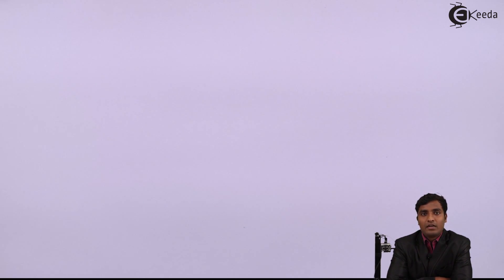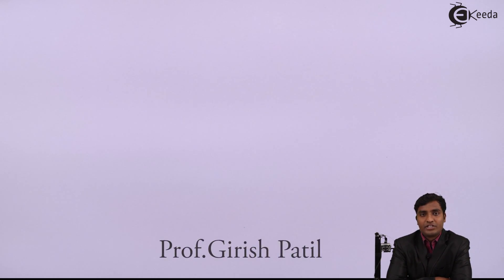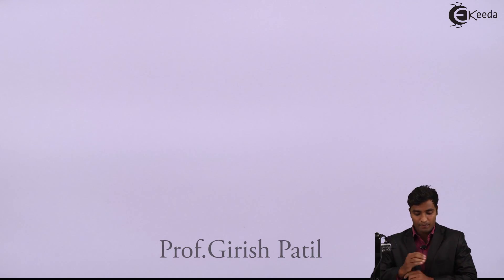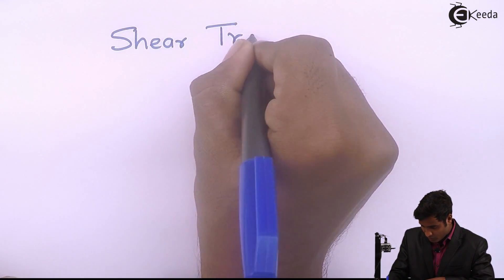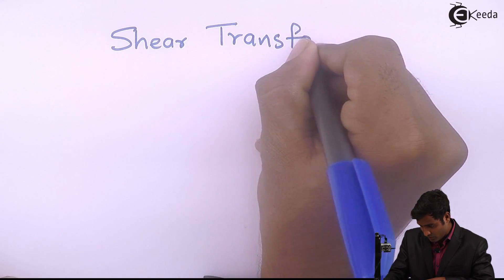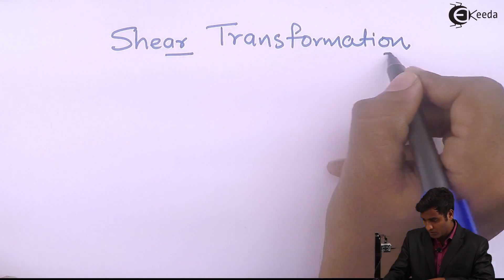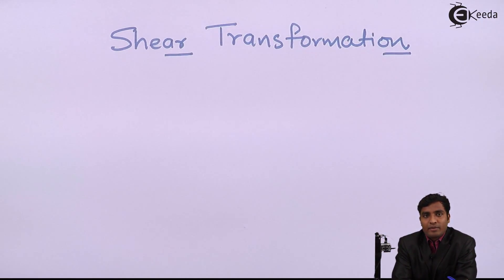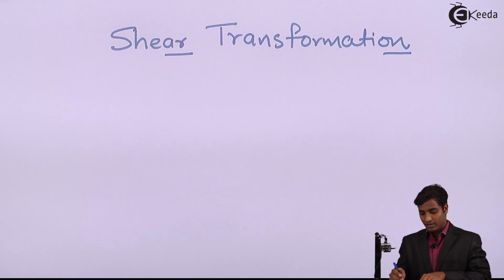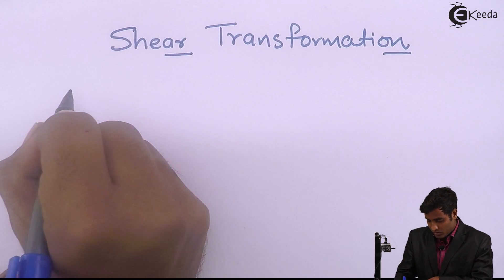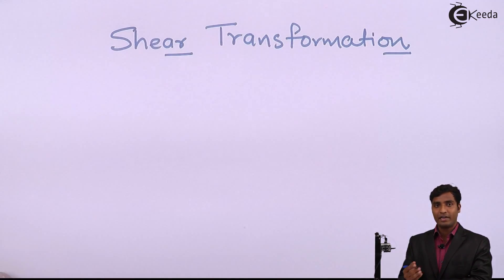Hello friends, today we will start one more special type of transformation, that is Shear Transformation. Shear Transformation is slanting of the image, meaning the image of the object will slant. I will write the definition for Shear Transformation.